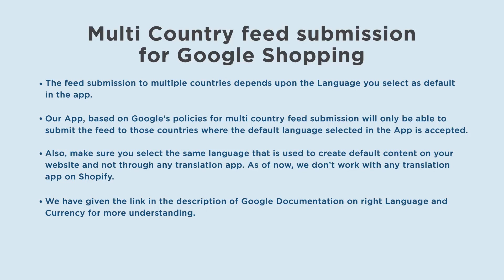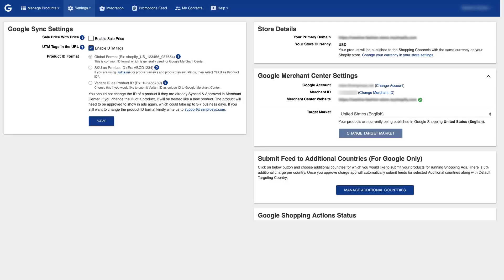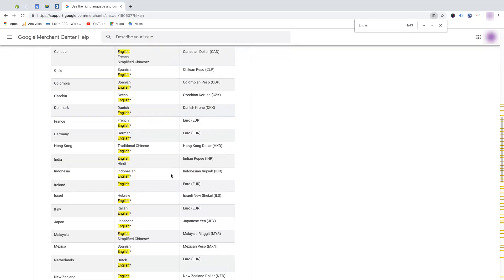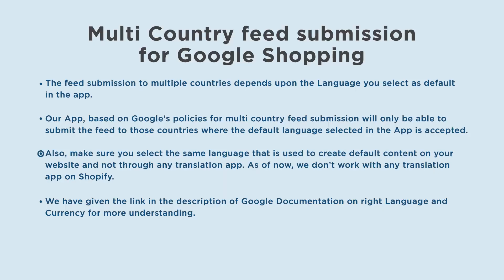The feed submission to multiple countries depends upon the language you select as default in the app. Our app, based on Google's policies for multi-country feed submission, will only be able to submit the feed to those countries where the default language selected in the app is accepted. For example, if the default language selected in the app is English, then you will be able to select all the countries where an English language feed is accepted.